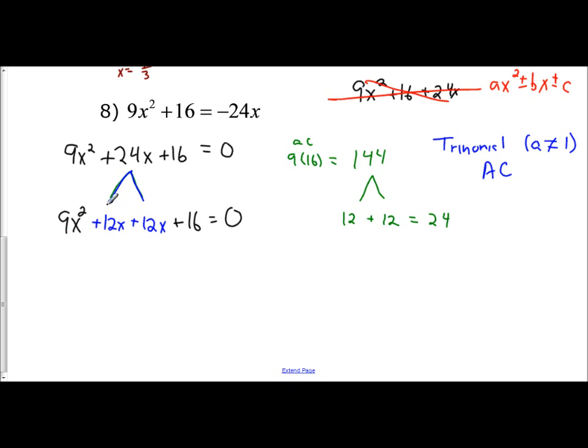If I look at what's the GCF for the first two terms, they have a 3x in common. I'd be left with a 3x plus 4. If I look at the GCF for the last two terms, they have a 4 in common, so you're left with 3x plus 4.